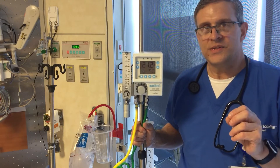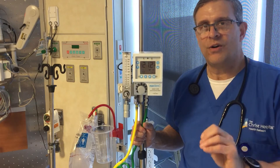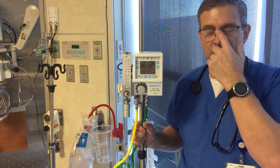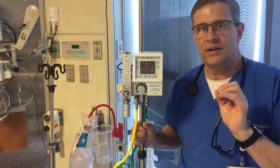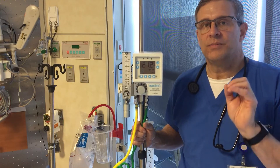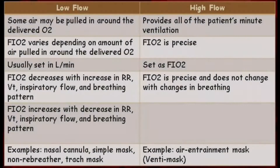Whereas high flow systems are very specific. They provide all of the patient's minute ventilation and they're given in FiO2 because you can guarantee a precise FiO2. Here's a chart summary of the technical differences between low flow and high flow oxygen delivery systems.